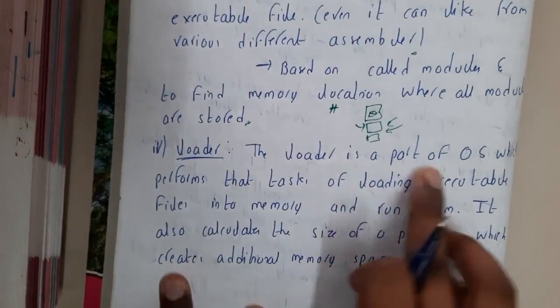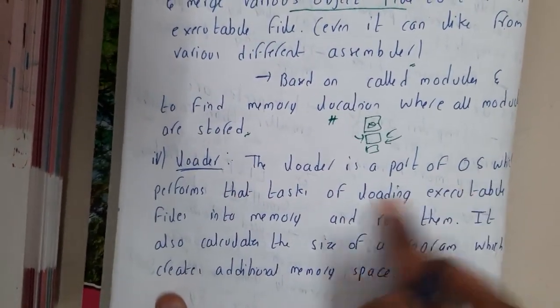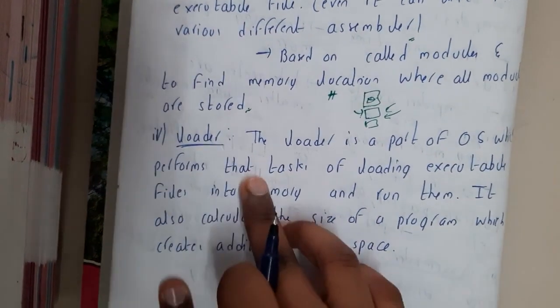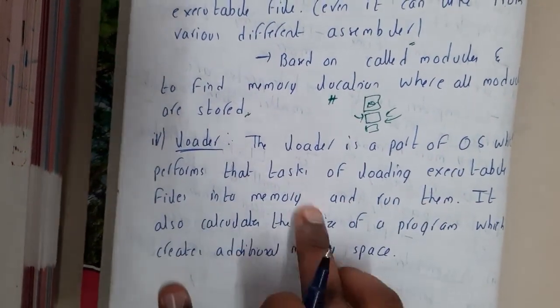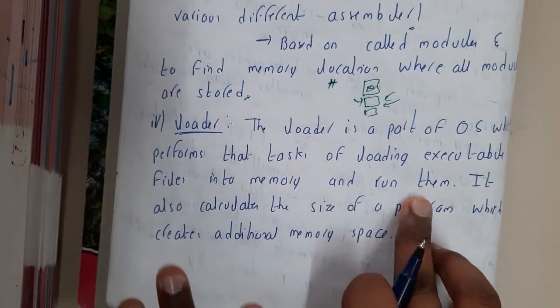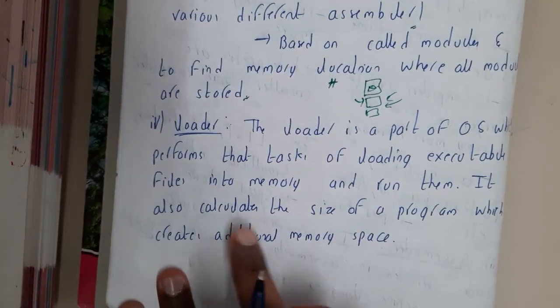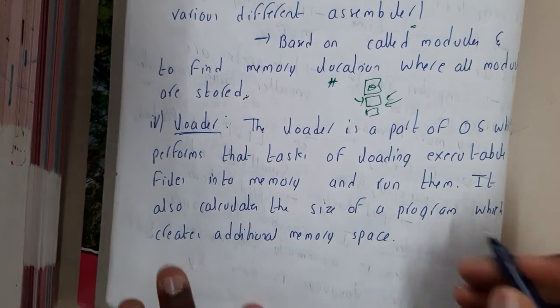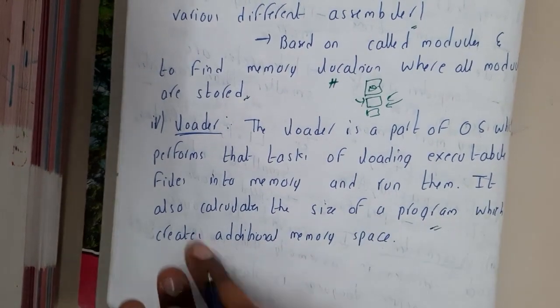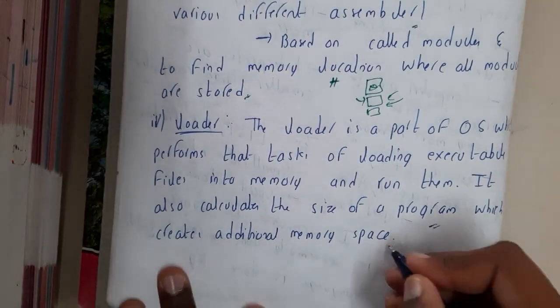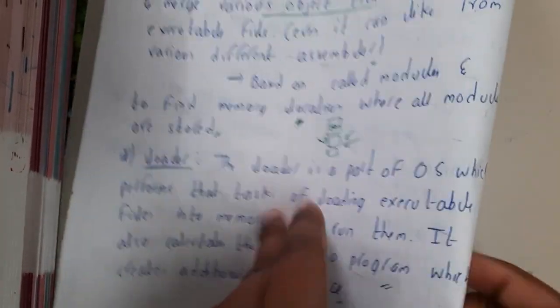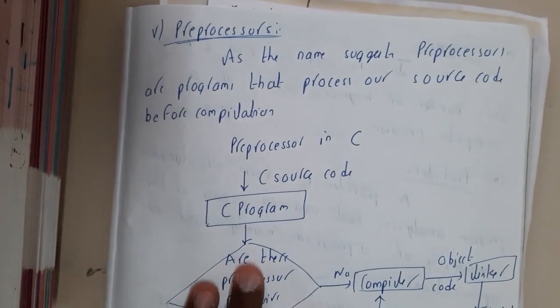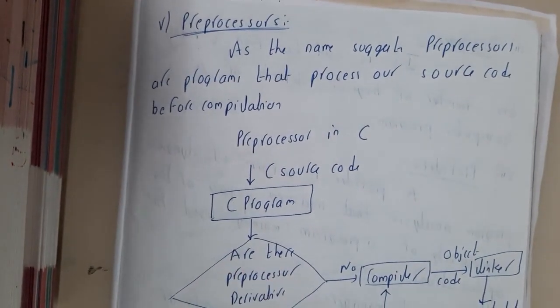The loader is a part of the operating system that performs the task of loading executable files into memory and running them. It also calculates the size of the program and creates additional memory space. Next is the pre-processor.